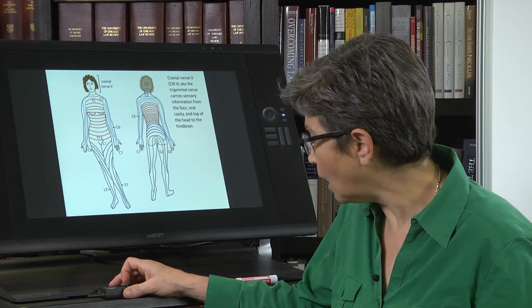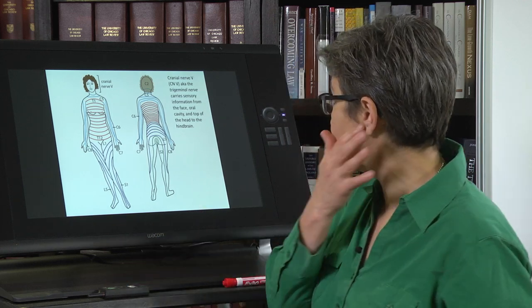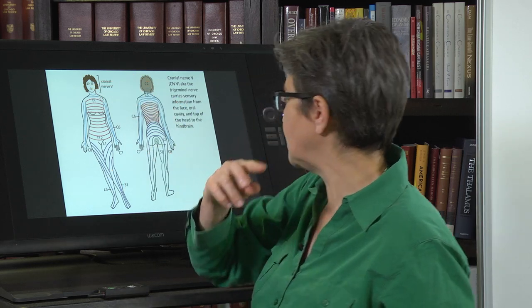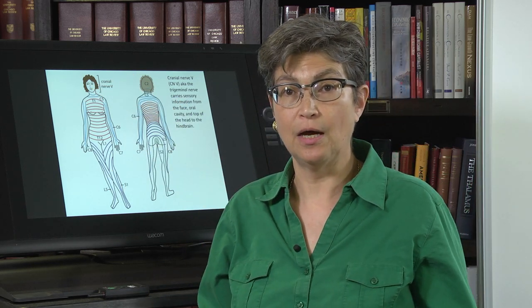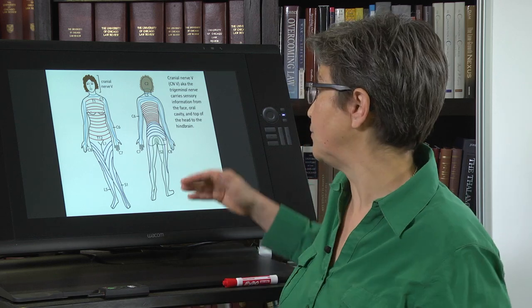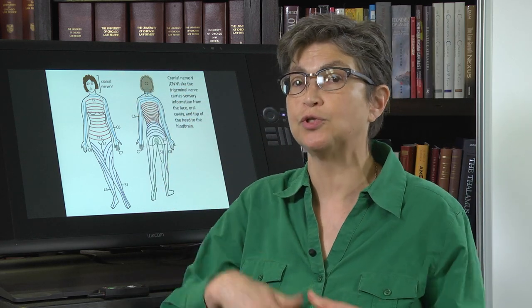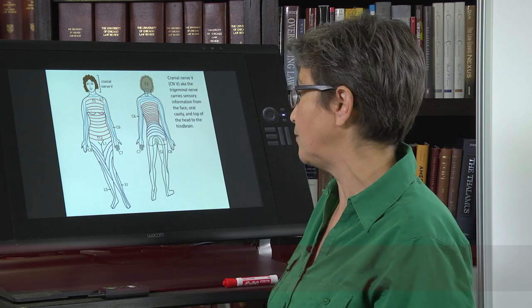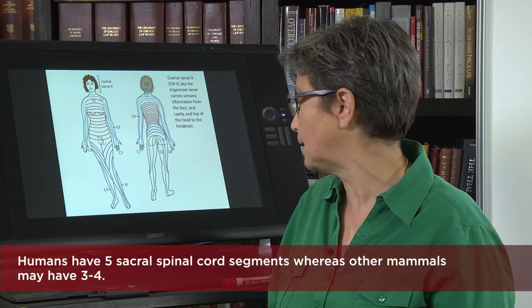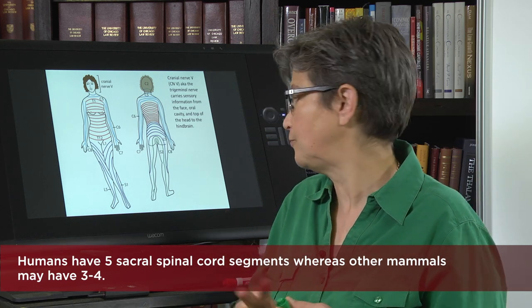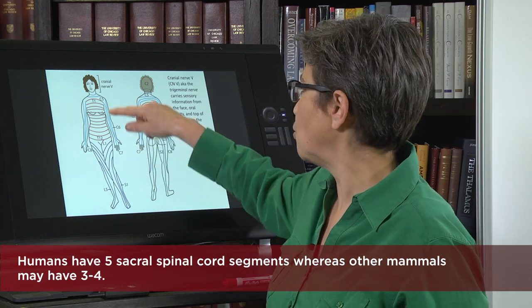And this simply shows you the organization in a standing person of the different roots. There are eight cervical roots, twelve thoracic roots, five lumbar roots, and three to five sacral roots.